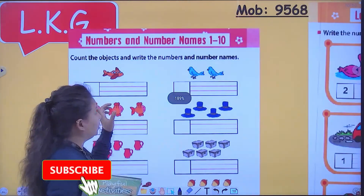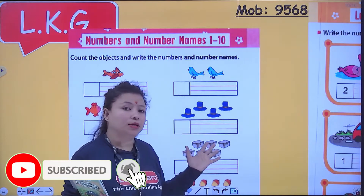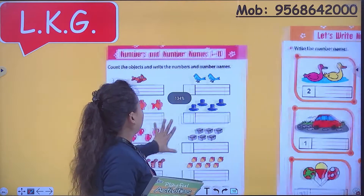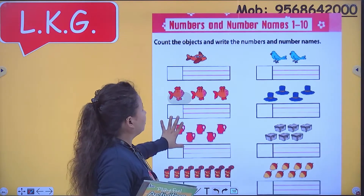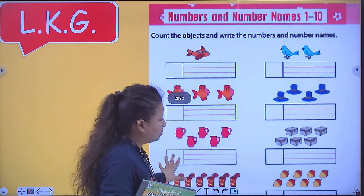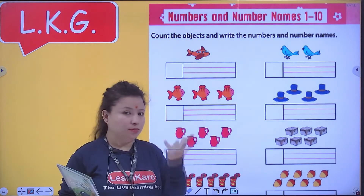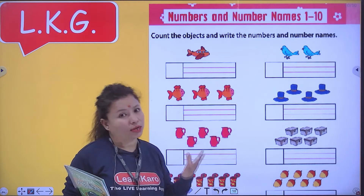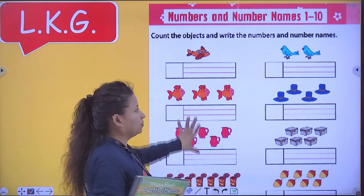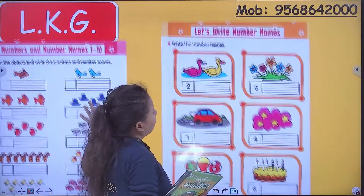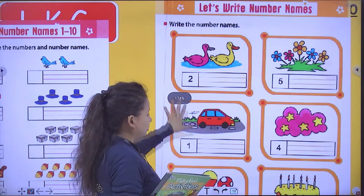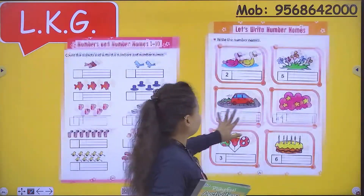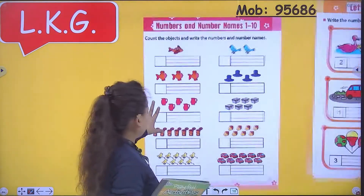Today we will learn about numbers and number names. Now in this page we have some objects. First of all we have to count the number — hume number count karna hai — and then hume uski spelling karni hai aur uska number name likhna hai. In the second activity, let's write number names. Ab hume usmein numbers diye hue hain, hume sirf numbers ki name likhni hai. Okay? Let's start.